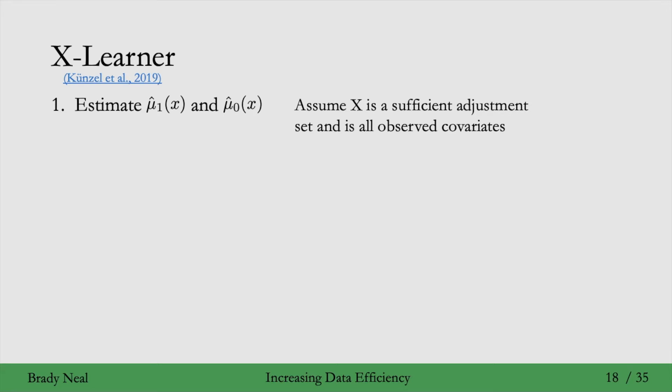So we just pick any model from scikit-learn, say, and then fit it for mu1 hat and do the same for mu0 hat. It can be a different model if you like.